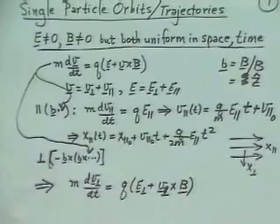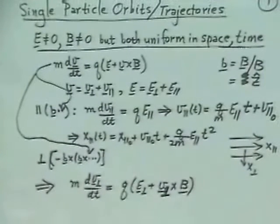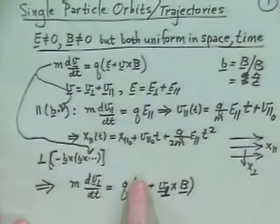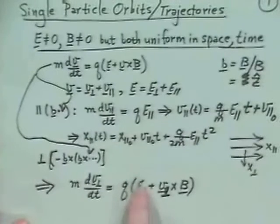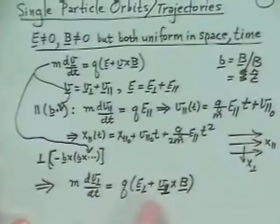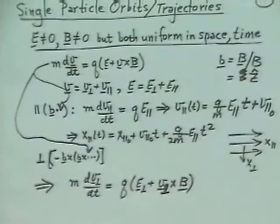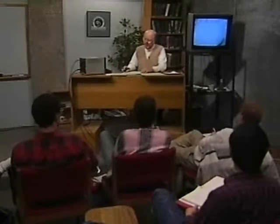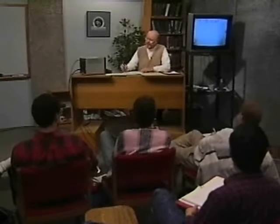All we've done is dissect out the parallel and perpendicular parts. Previously when we treated gyro motion, we just didn't have the E_perp term. Since E_perp and B are constants, maybe we can add another constant velocity V_E — a V cross B term — which would take care of E_perp. Chen and Bittencourt do this differently; I'm going through these things in a slightly different order to show a different way of calculating particle orbits.